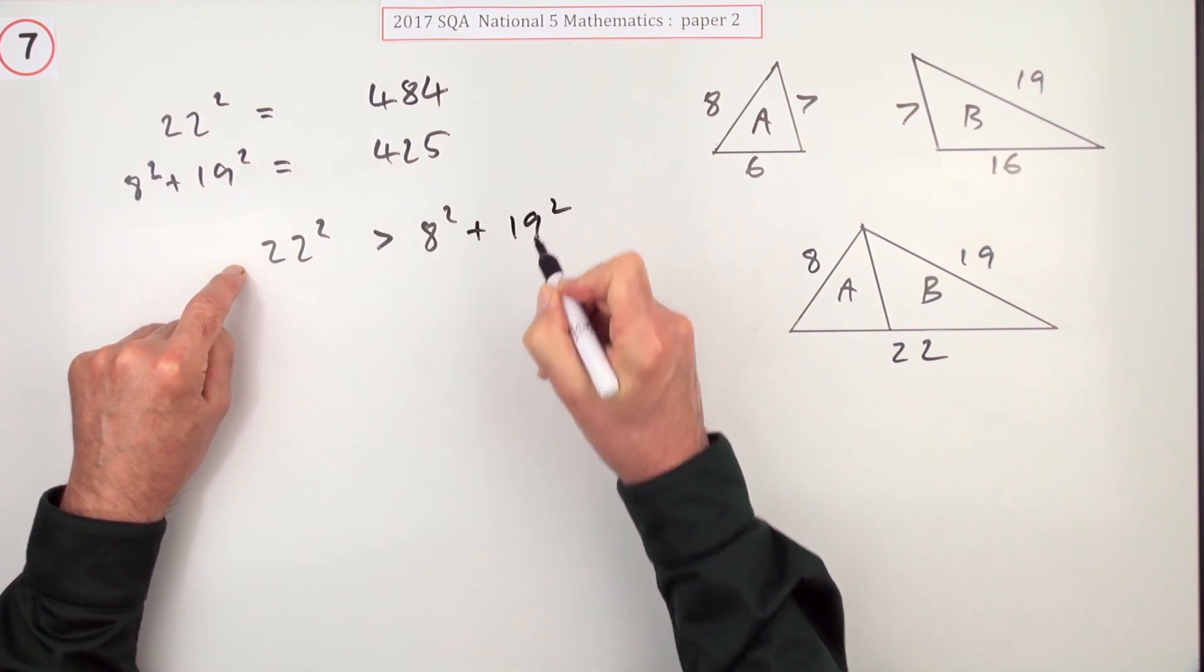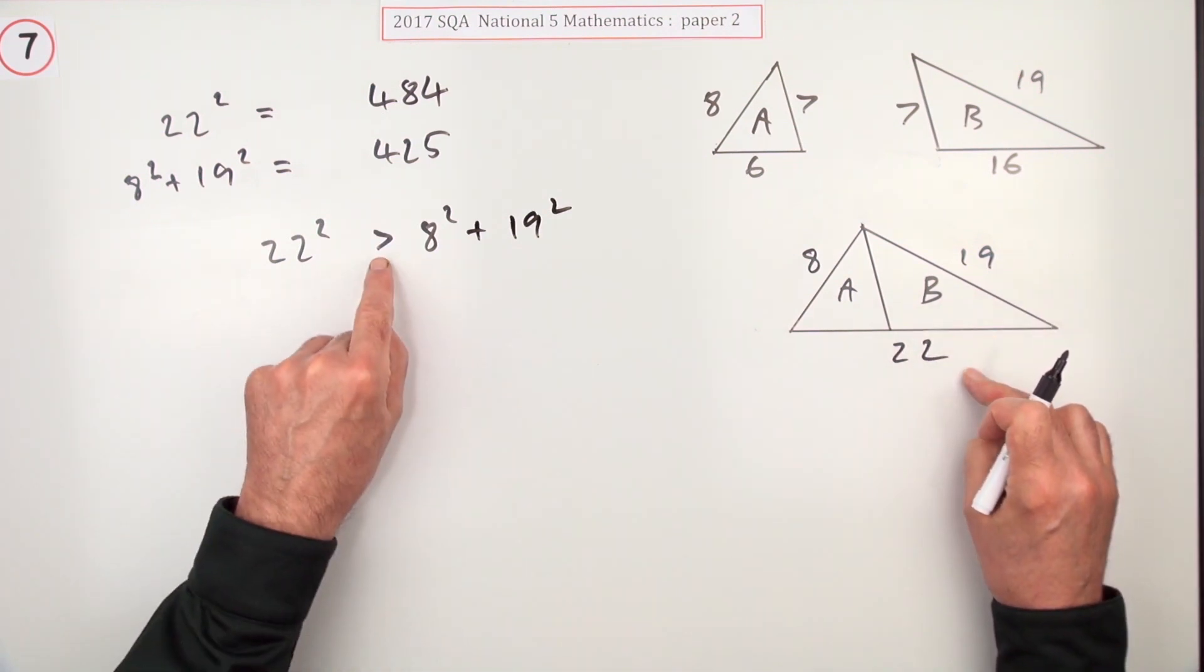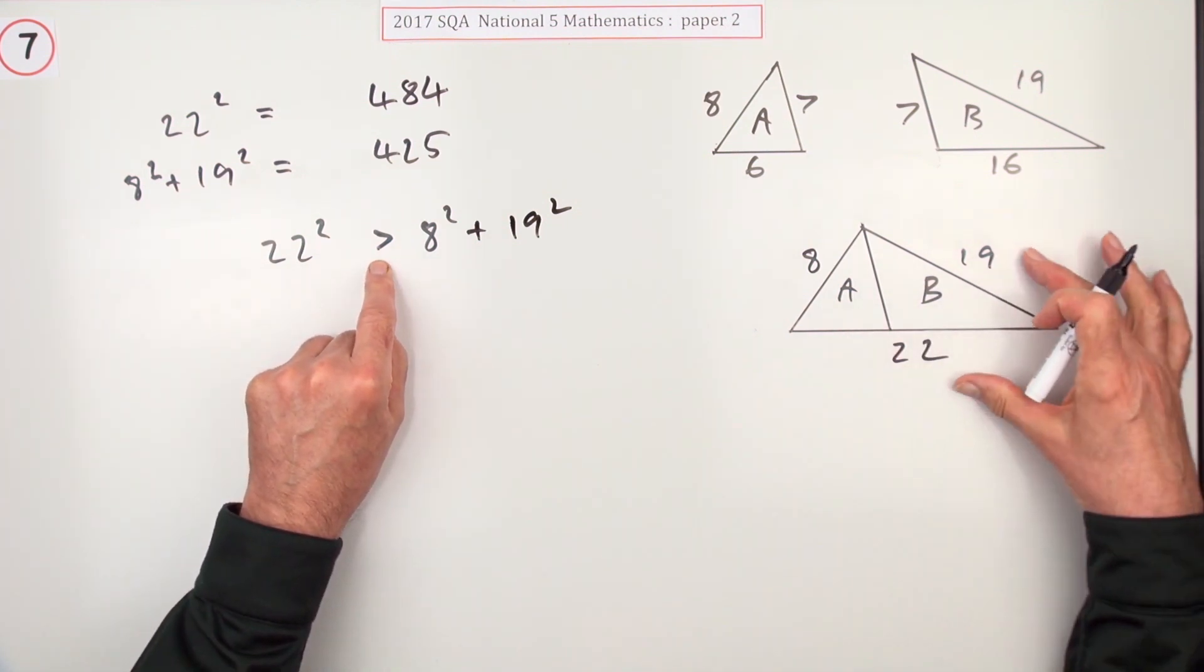That's what you wanted to check, to see if it was right-angled or not. If it had been equal to it, Pythagoras would have worked. If it's not equal to it, it means it doesn't work.